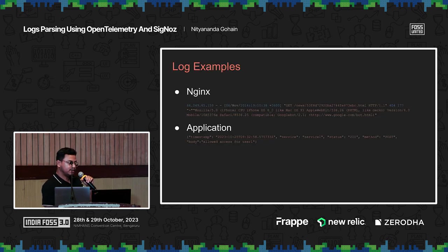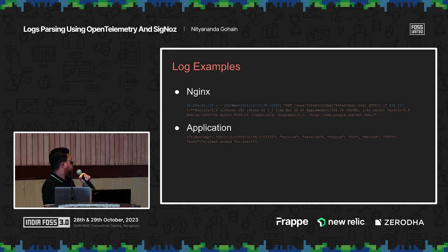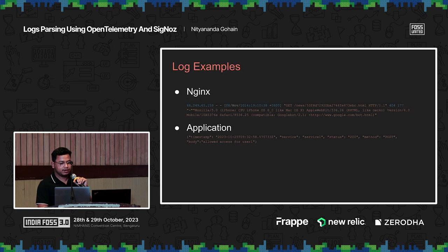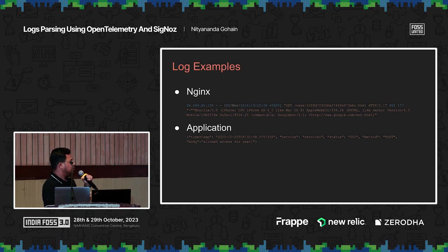Here I have taken two simple examples — one is the Nginx log and one is your application log. For Nginx, you can see there are various components: the host, the timestamp, and other stuff in the log line. The application log is a JSON structured log with various components like timestamp, service, status, method, and other fields. You need to convert this log line to a structure that is supported by OpenTelemetry so that you can export it to any destination you want.